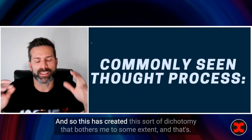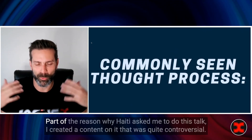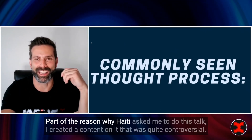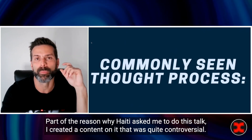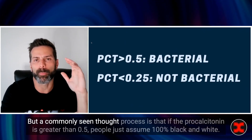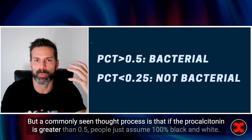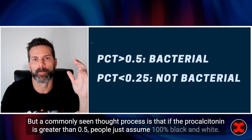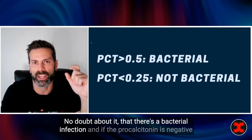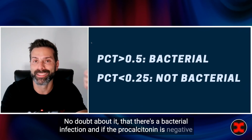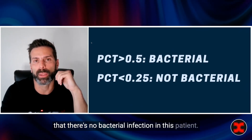This has created a sort of dichotomy that bothers me, and that's part of the reason why Haney asked me to do this talk — I created content on it that was quite controversial. A commonly seen thought process is that if the procalcitonin is greater than 0.5, people just assume 100% black and white, no doubt about it, that there's a bacterial infection. And if the procalcitonin is negative, that there's no bacterial infection in this patient.